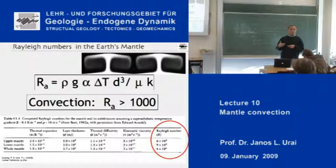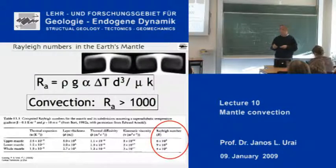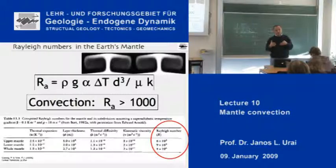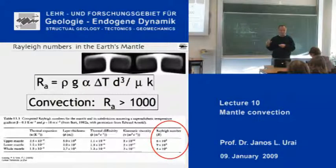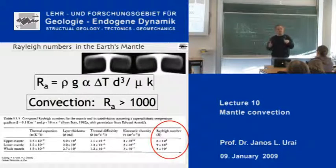For many, many years, it has been known that whatever you do to calculate the Rayleigh number for the mantle of the Earth, you will get very high numbers. Here are some estimates: 6,000, 600,000, or 4 million. There is a lot of discussion about what this number actually is, and different parts of the mantle probably have different Rayleigh numbers because the viscosities are not well known. But everybody agrees that the Rayleigh numbers in the mantle are far higher than what is required for convection.